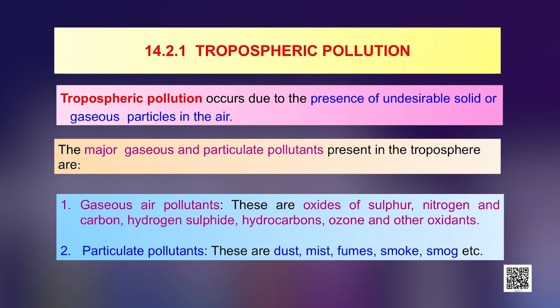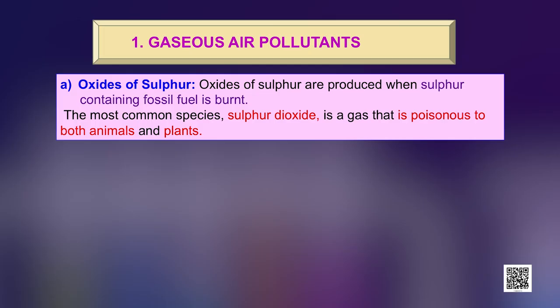Particulate pollutants are dust, mist, fumes, smoke, smog, etcetera. Let us now study about the gaseous air pollutants in detail. The first category is that of oxides of sulfur. Oxides of sulfur are produced when sulfur-containing fuel, especially fossil fuel, is burnt. The most common species, sulfur dioxide, is a gas and is poisonous to both animals and plants.